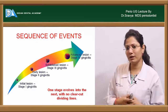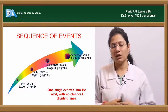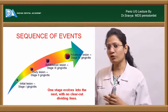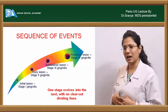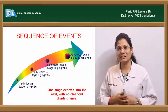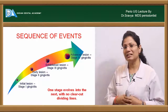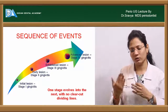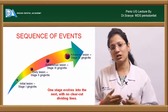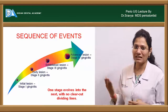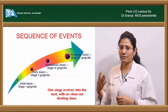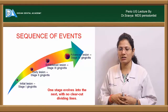What are the sequence of events that happen? There are four stages: your initial lesion, your early lesion, your established lesion, and then your advanced lesion.